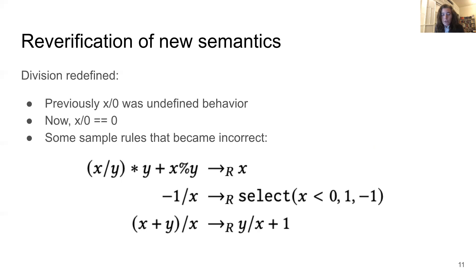On the slide, I have a few example rules that were correct under the original semantics, but incorrect where dividing by zero yields zero. In this case we're using formal verification to actually free up developers to make changes like this. Otherwise, this change would have required a lot of time, a lot of testing, a lot of uncertainty.